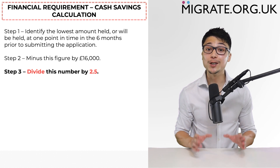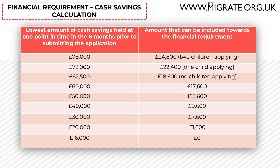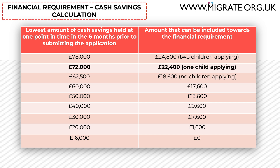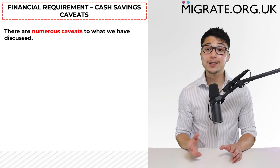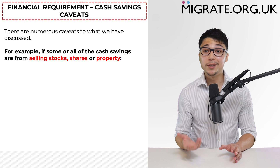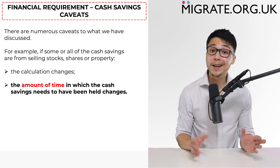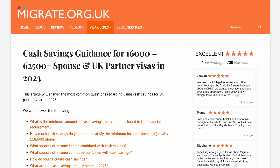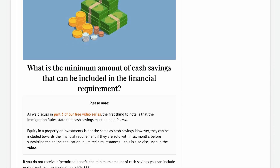Just to give you an idea of the amount of cash savings required: if no dependent children are applying, £62,500 cash savings is required to have been held for 6 months, while £72,000 cash savings will be required if there is one dependent child also applying as part of the fiancé visa application. As with most areas of the immigration rules, there are numerous caveats — for example, if some or all of the cash savings are a result of selling stocks, shares, or property, the calculation as well as the amount of time in which the cash savings needs to have been held changes. For more information about cash savings, we have written a comprehensive guide on our website, migrate.org.uk.